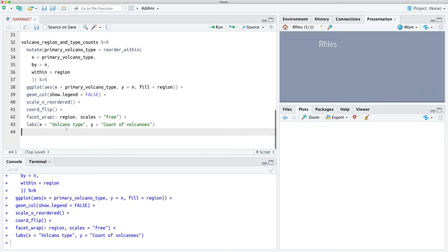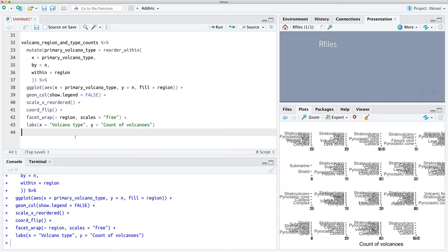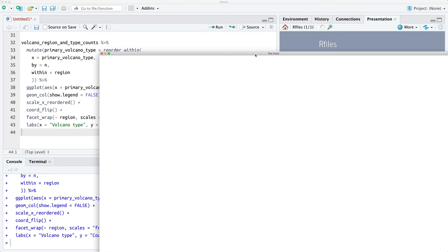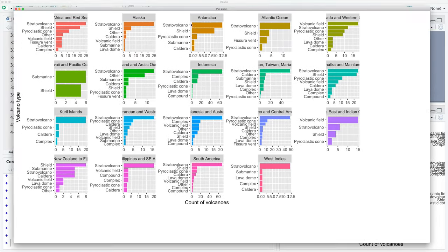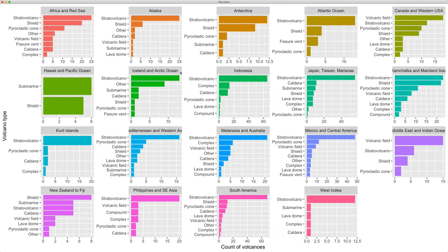We run the final plot and here we go — we now have the counts of different types of volcanoes by region. I hope this has been helpful. If you found this useful and would like more content like this, please let me know in the comments below.